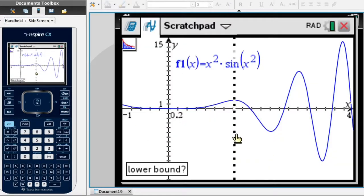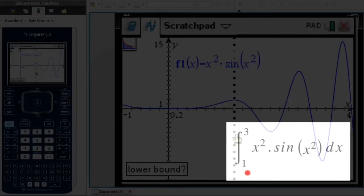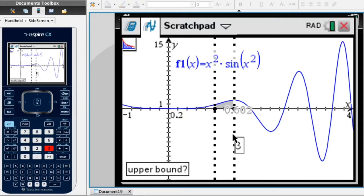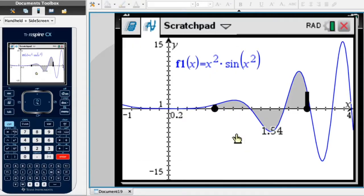Notice that it now asks me for the lower bound. Remember we were integrating from x equals 1 to x equals 3. So our lower bound is 1. And all I have to do to say that is type 1. I then click enter. It now asks me for the upper bound. And the upper bound remember was x equals 3. So I type 3 and again I click enter. And we're done.